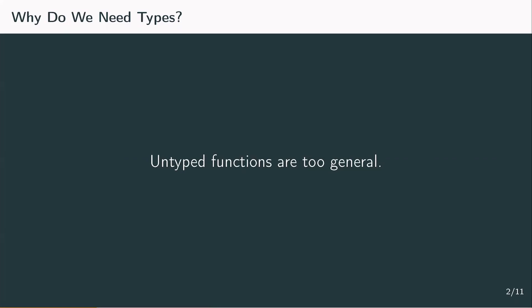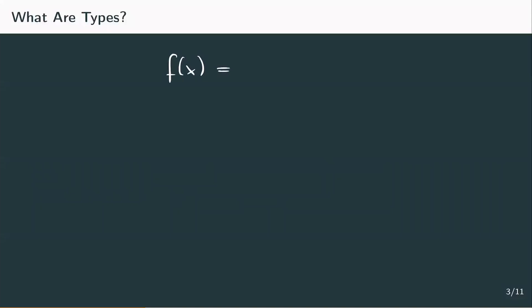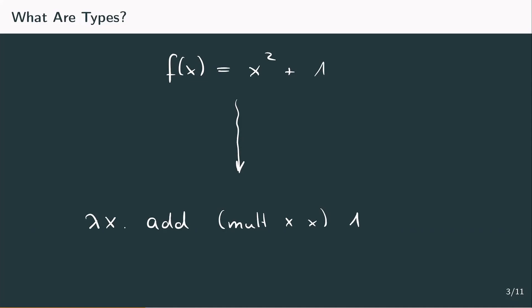We begin with an informal motivation before we look at the formal definition. Consider the function f(x) = x² + 1. We can translate this into the lambda calculus and write lambda x dot add applied to multiply x x — which is x squared — applied to 1. This function should take natural numbers and map them to natural numbers. We denote this by putting a colon behind the term and writing natural numbers to natural numbers. To say that the input should be of type N, we write lambda x of type N. So variables can have types and terms can have types too.